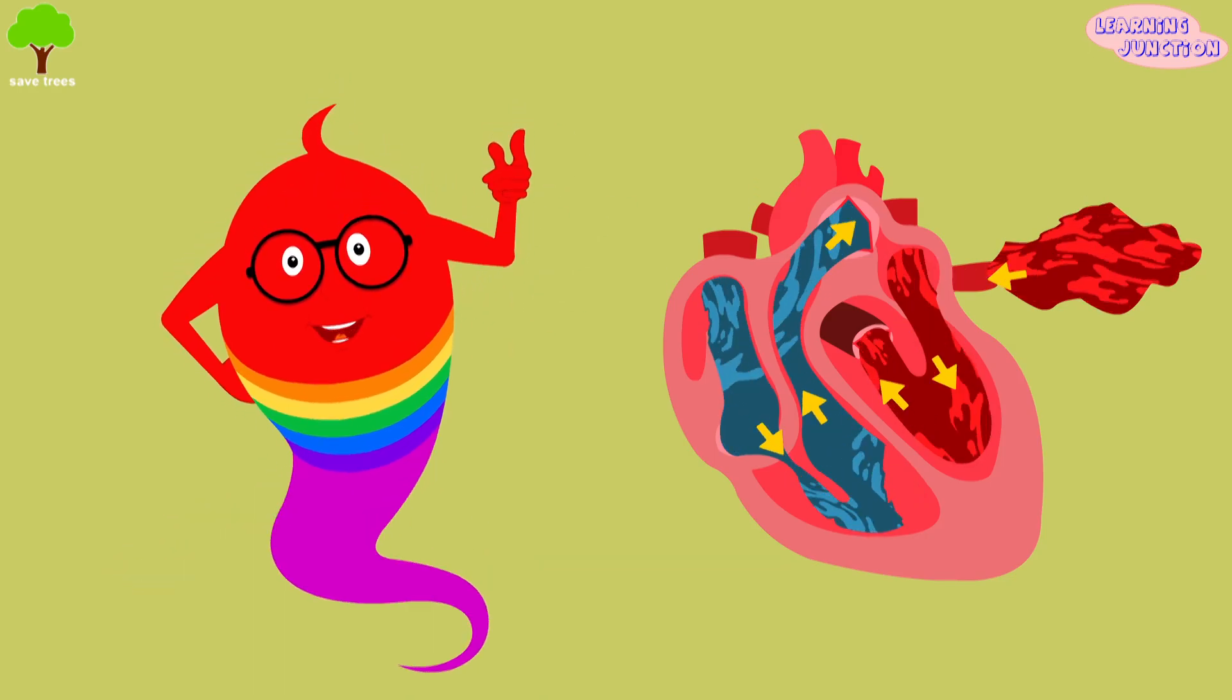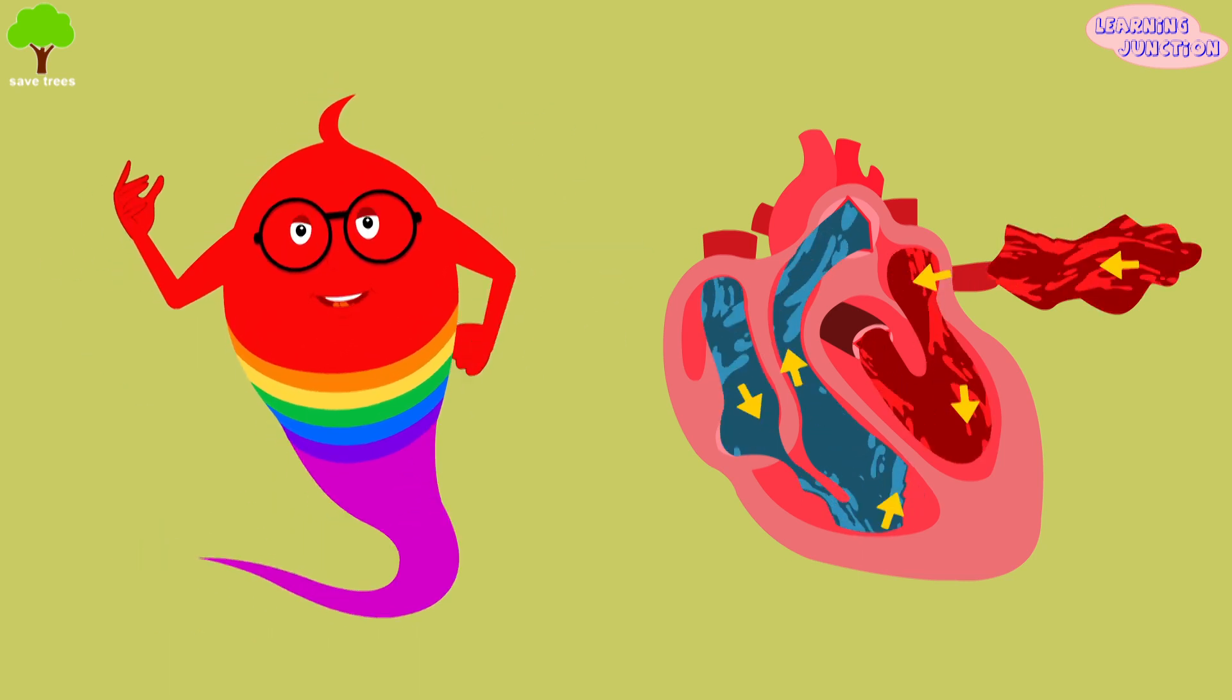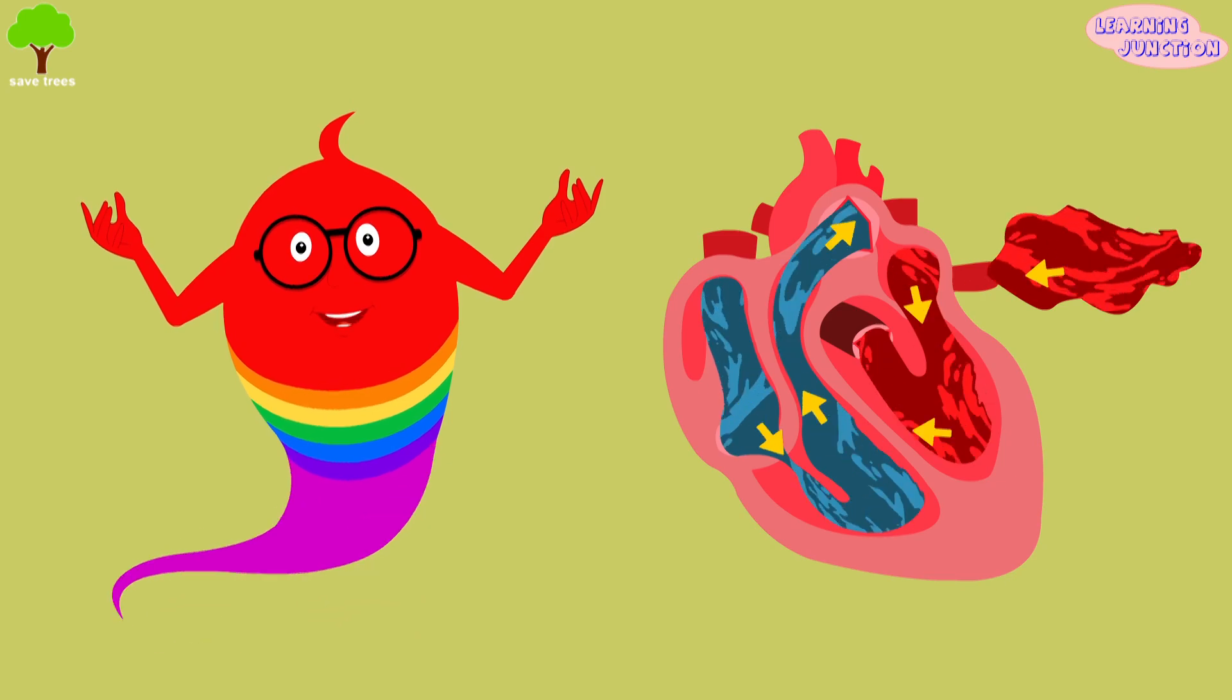Our lungs oxygenate the blood and flows back into the heart through the pulmonary vein and starts this cycle again.